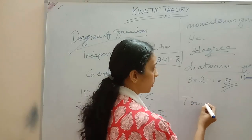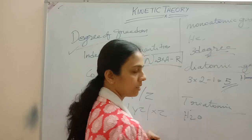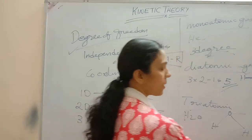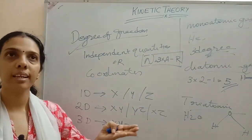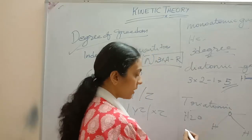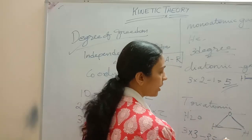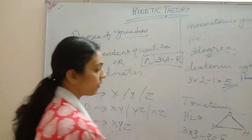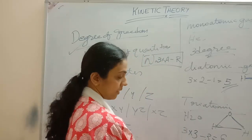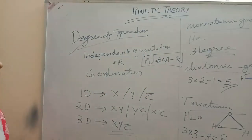Next, for a triatomic molecule, consider water. Water is represented in a triangular (non-linear) manner, so 3×3 = 9 minus three restrictions gives six degrees of freedom. If the molecule is linear, then 3×3 minus two restrictions gives seven degrees of freedom. So depending on the restrictions and geometry, the degree of freedom changes.